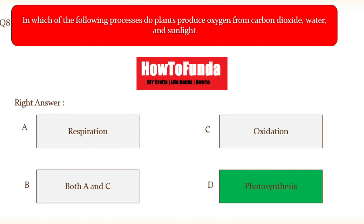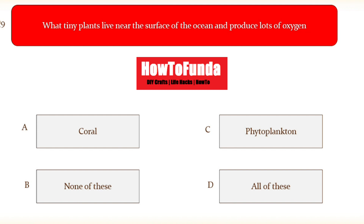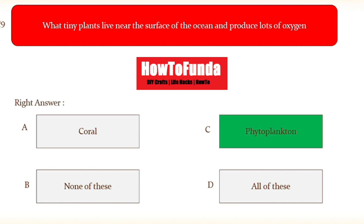Question number nine: what tiny plants live near the surface of the ocean and produce lots of oxygen? Option A coral, option B none of these, option C phytoplankton, option D all of these. The right answer is phytoplankton — phytoplankton are the tiny plants that live near the surface of the ocean and produce a lot of oxygen.